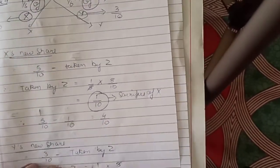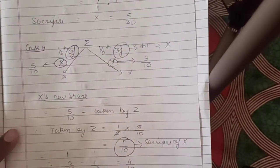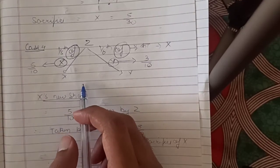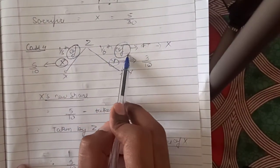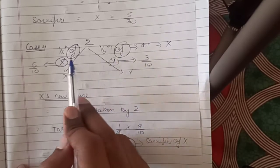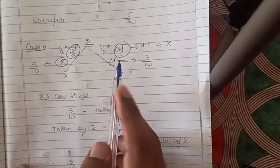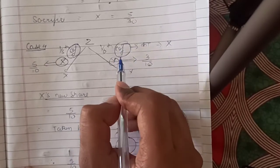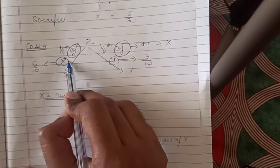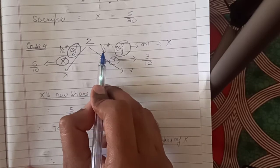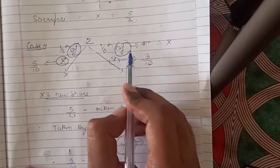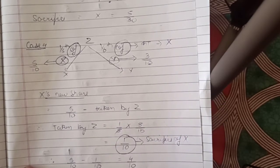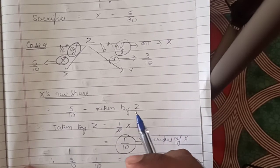Let's move on to the last case. Z acquires 1/5 share of X and 1/6 share of Y. The word 'of' means we multiply. When 'from' comes, we use minus; when 'of' comes, we use multiply.